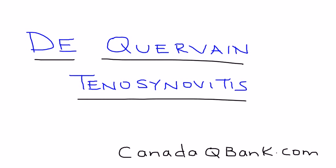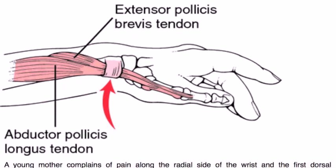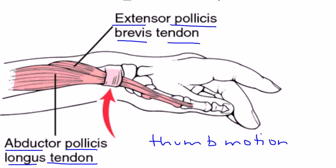De Quervain's tenosynovitis involves the tendons of two muscles: the extensor pollicis brevis and the abductor pollicis longus. These two muscles have associated tendons, labeled in this diagram, and they are involved in thumb motion. As you can deduce, this condition involves the restriction or lack of thumb motion.